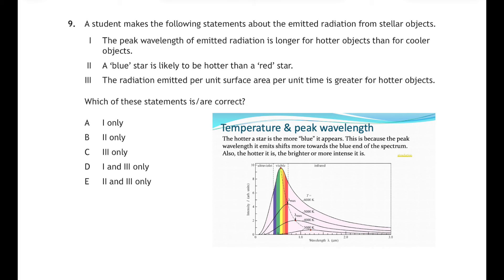If I just read that paragraph on the slide, it says the hotter a star is the more blue it appears. This is because the peak wavelength it emits shifts more towards the blue end of the spectrum, and also the hotter it is the brighter or the more intense it is. So looking at these three statements then, statement one: the peak wavelength of the emitted radiation is longer for hotter objects than for cooler objects - nope, that's incorrect. A blue star is hotter than a red star - yes that's correct. And the radiation emitted per unit surface area per unit time is greater for hotter objects - well that's correct as well. A hotter star has a greater intensity. So two and three only. That's nine E.